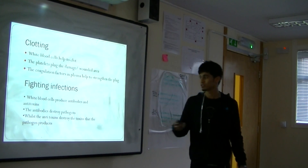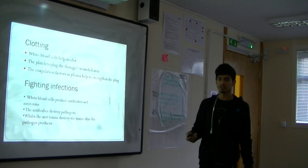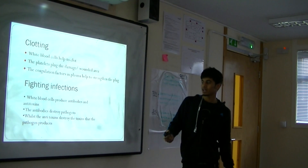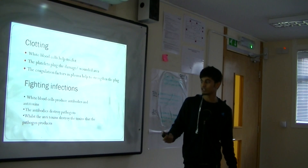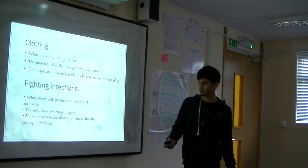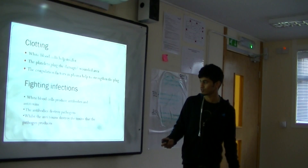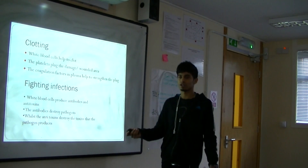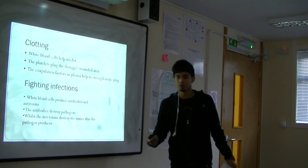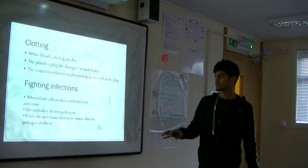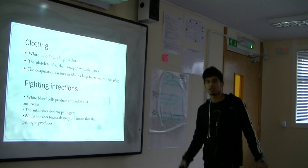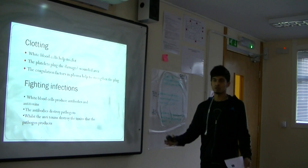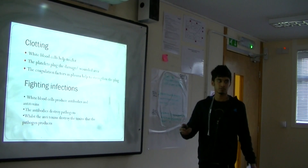Fighting infection: white blood cells produce antibodies and anti-toxins. When the body has a virus, the antibody locates the virus and produces antibodies and anti-toxins, which go and attack the pathogen — which is the virus.